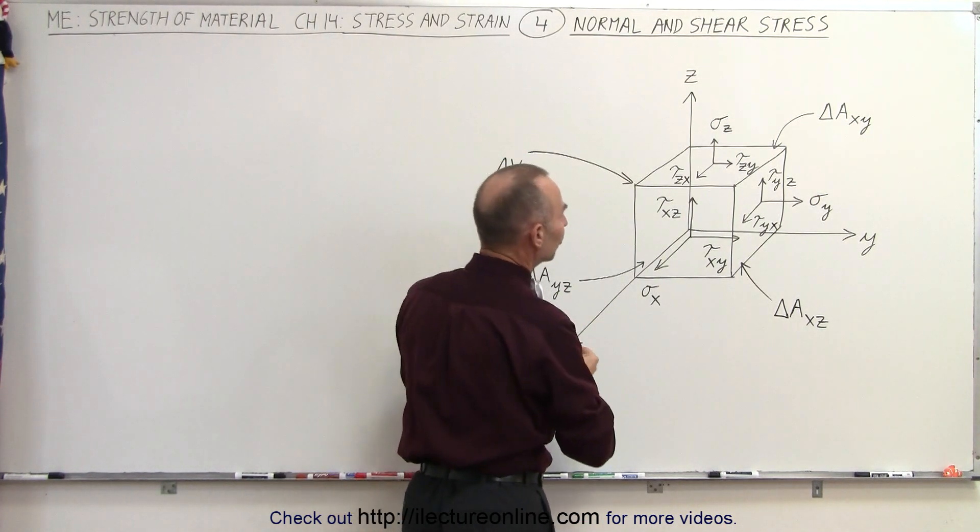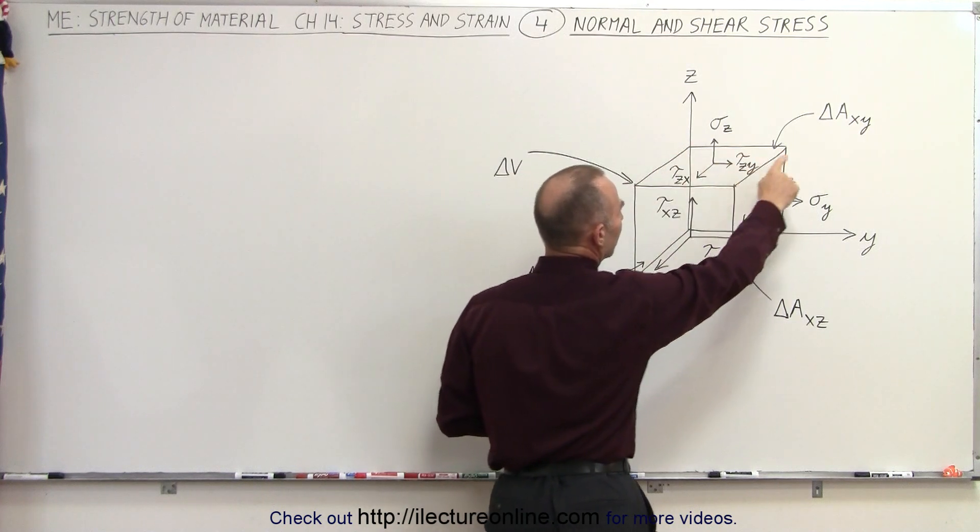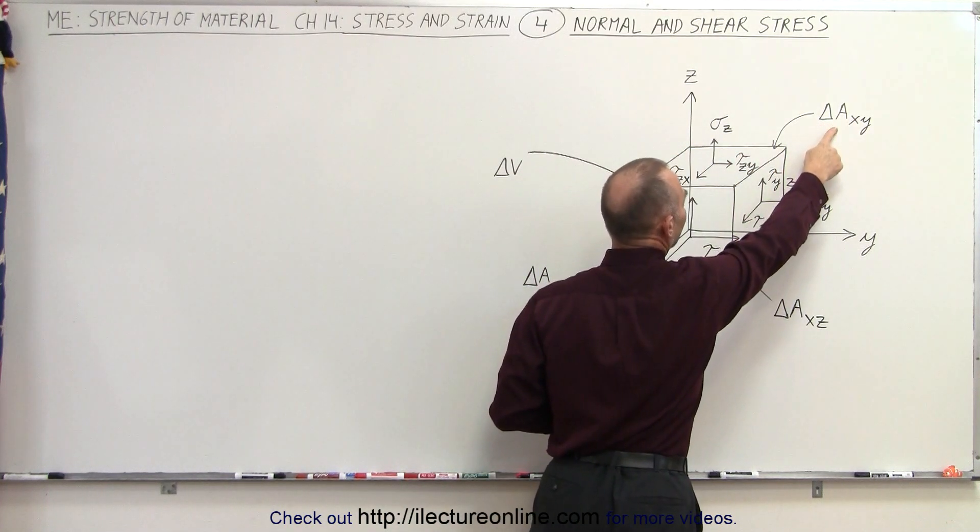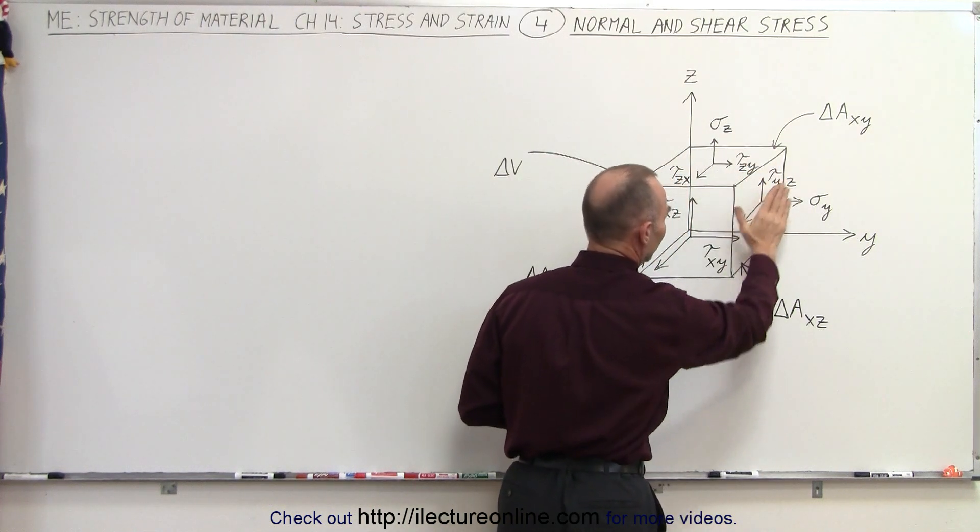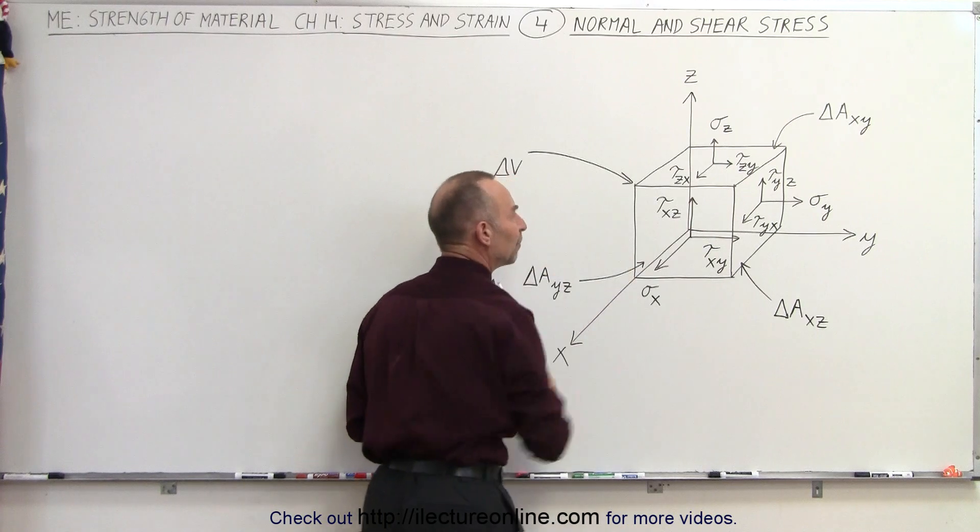And so notice that we have surface areas. The cross-sectional surface area, the small dv here, can be called the delta a in the xy plane. Here we have a delta a in the xz plane, and here we have a delta a in the yz plane.